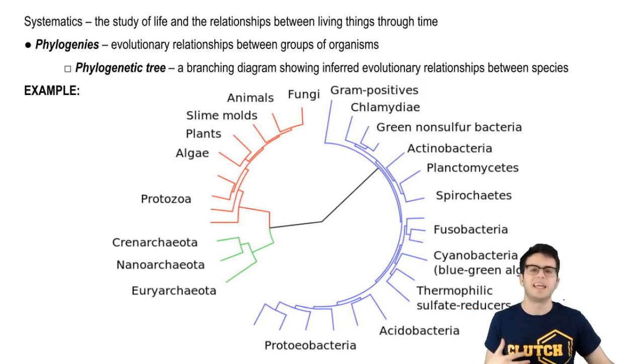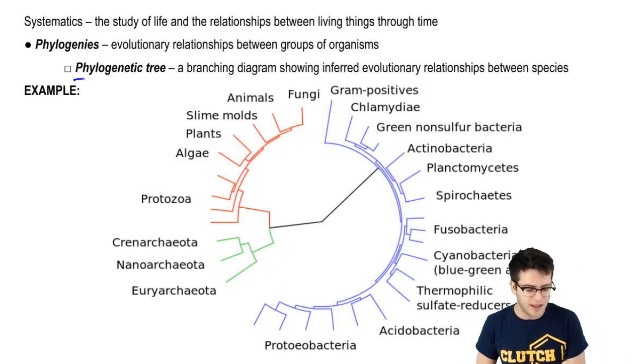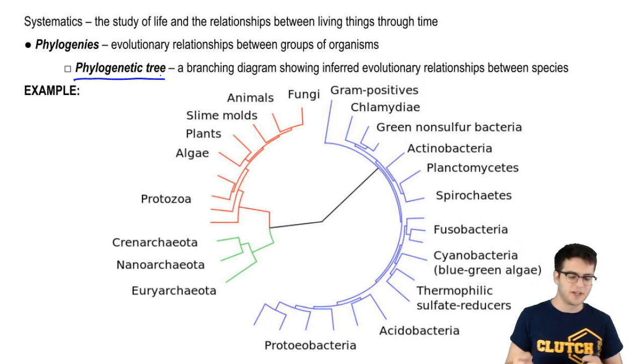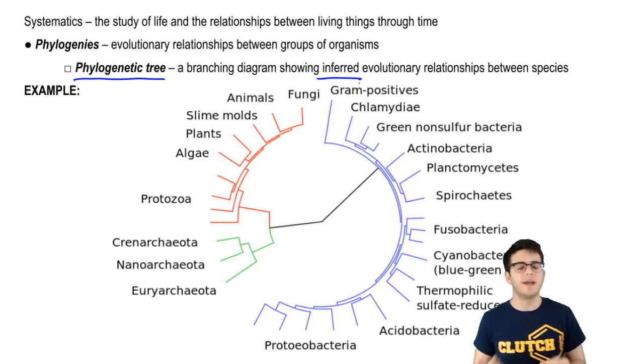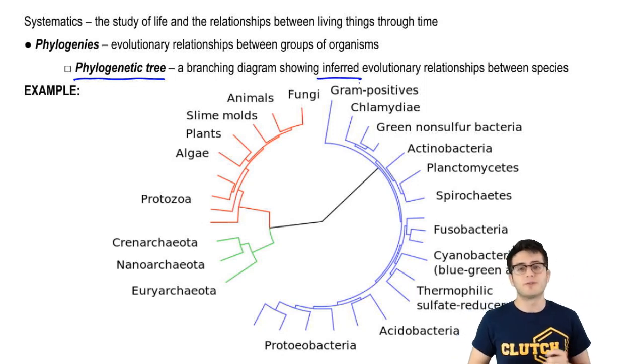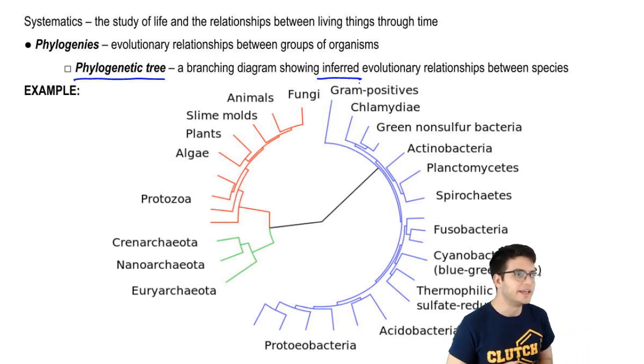And normally, these are displayed in something called a phylogenetic tree, which is like the one you see here. It's a branching diagram that shows inferred evolutionary relationships between species, and that term inferred is important because, quite frankly, we don't know for sure. A lot of this is based on inference.